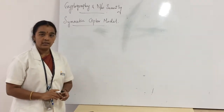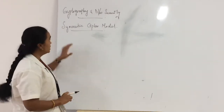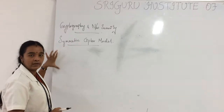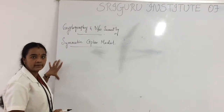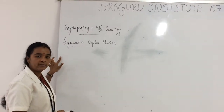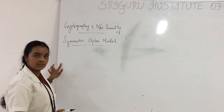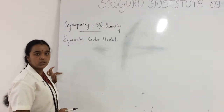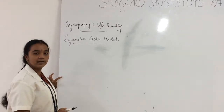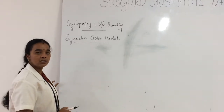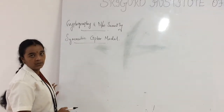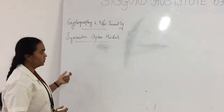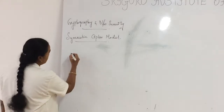The Symmetric Cipher Model has five ingredients: Plain Text, Cipher Text, Encryption Algorithm, Decryption Algorithm, and Key. So let us see how the process works.